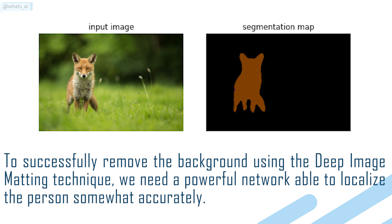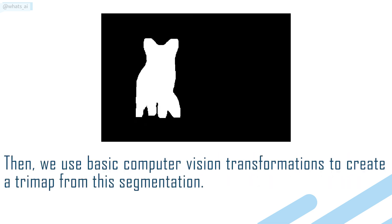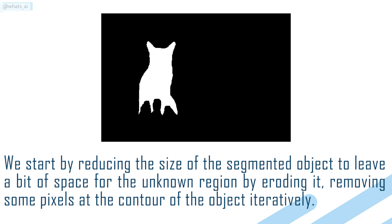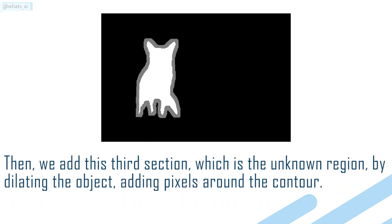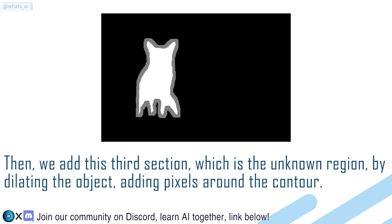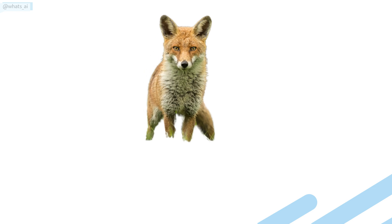To successfully remove the background using the Deep Image Matting technique, we need a powerful network able to localize the person somewhat accurately. Then we produce a segmentation where pixels equivalent to the person are set to 1 and the rest to 0. Then we use basic computer vision transformations to create a trimap from this segmentation. We start by eroding the segmented object — removing some pixels at the contour iteratively — to leave space for the unknown region. Then we add the unknown region by dilating the object, adding pixels around the contour, producing a result like this. This trimap is sent to the Deep Image Matting model with the original image to get your output. You can see how much computation power is needed, using two powerful models to achieve somewhat accurate results.